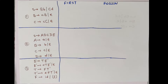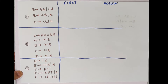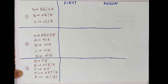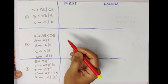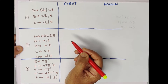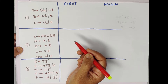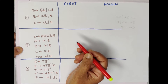Hello, now we will see how to find out FIRST and FOLLOW of the given grammar. We will consider three grammars, and for this we are going to find out FIRST and FOLLOW, which are needed in top-down as well as bottom-up parsers. There are algorithms for finding out FIRST and also for finding out FOLLOW.